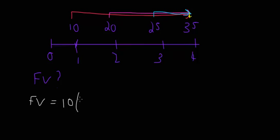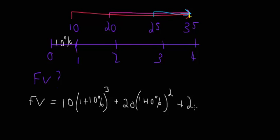So the future value equals 10 multiplied by (1 + 10%), that's 1.1, and we need to compound that three times. Then we're going to add 20 times (1 + 10%)^2, plus 25 times (1 + 10%)^1. And then we're going to add 35 because we get to the end of the time period. I know it's all a little bit like Back to the Future, but as long as you can understand that, it will all work out.